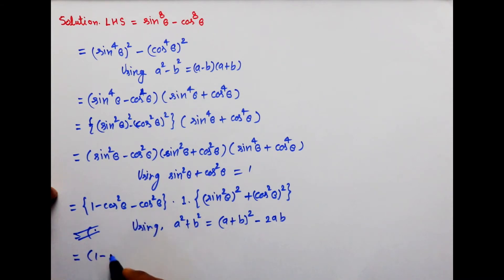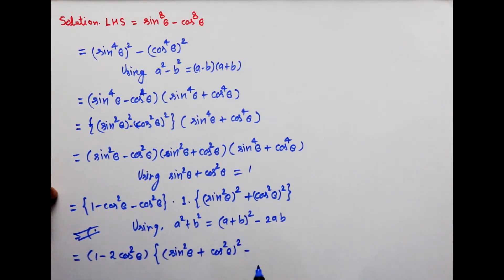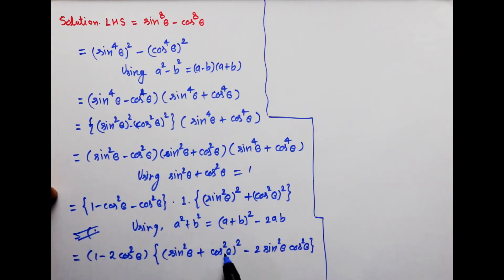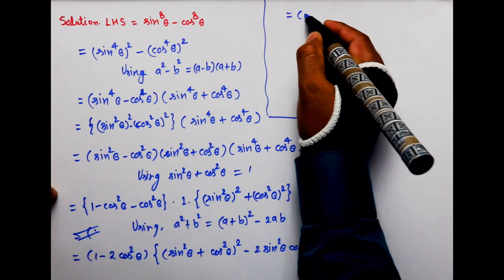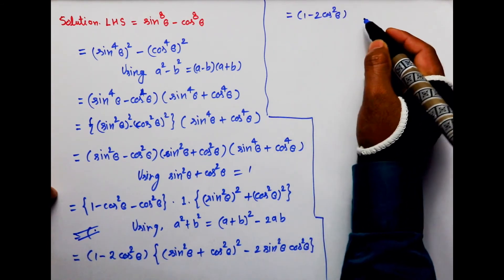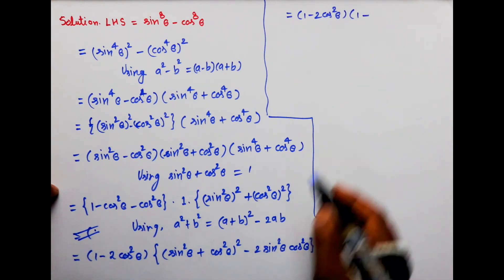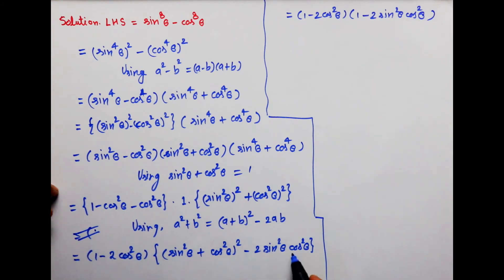Toh yeh ho jaayega: 1 minus 2 cos square theta. Aur yahan formula use karenge: (sin square theta plus cos square theta) whole power 2 minus 2 sin square theta cos square theta. Sin square theta plus cos square theta = 1. Toh 1 ka square 1 rahega, aur yeh 2 sin square theta cos square theta ho jaayega.